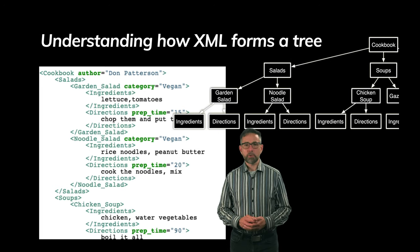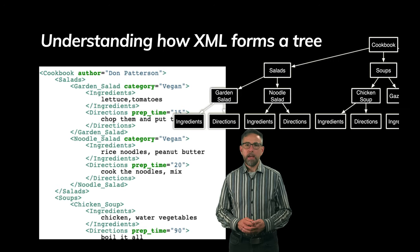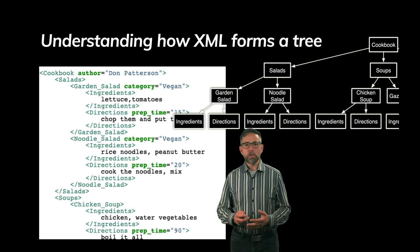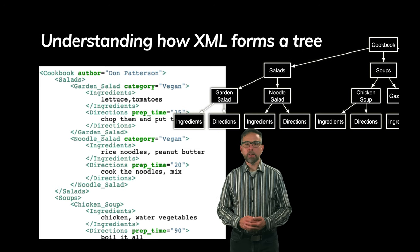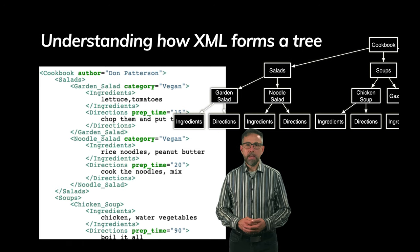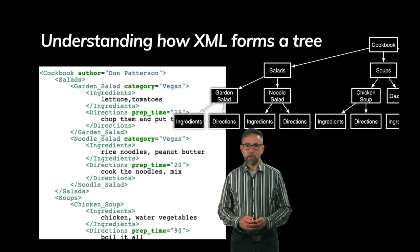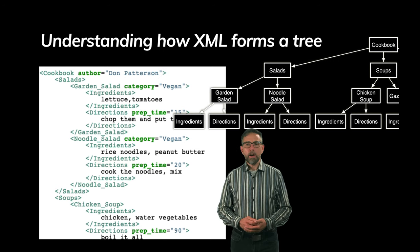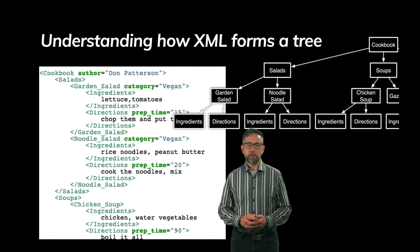Salads has two children — garden salad and noodle salad. Because garden salad is closed before noodle salad is opened, garden salad and noodle salad function as siblings. Garden salad has an attribute called 'category' assigned the value 'vegan,' and it has two children: an ingredients node and a directions node. These two nodes are siblings and children of garden salad. Ingredients has data — lettuce and tomatoes — and directions has data: chop them and put them in a bowl.